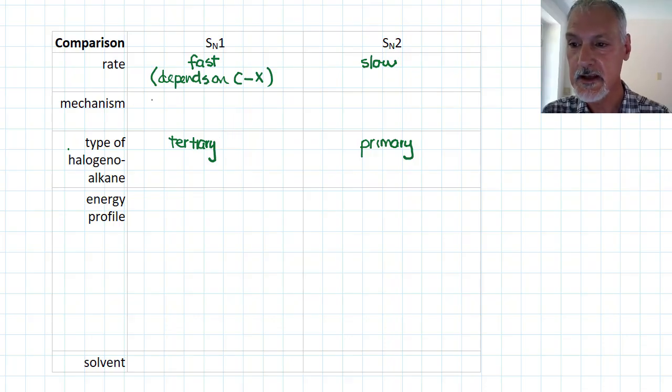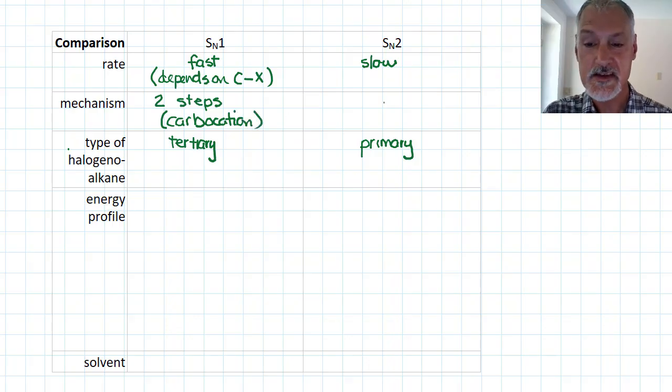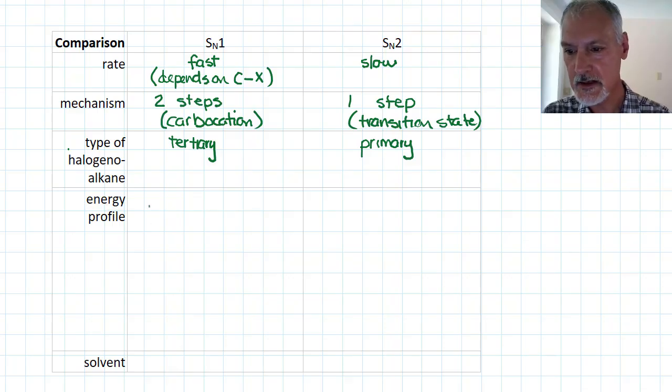The mechanism here has two steps. And you form in the middle this carbocation, the carbon with a positive charge. In the case of SN2, they happen in one smooth step, forming that transition state at the midway point.